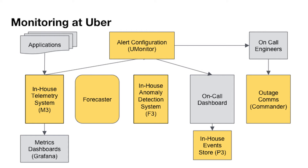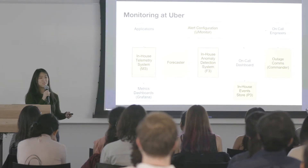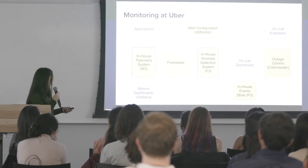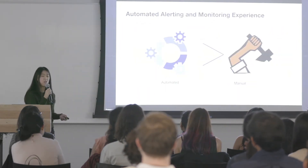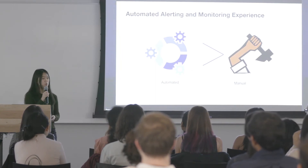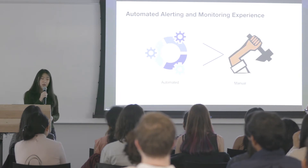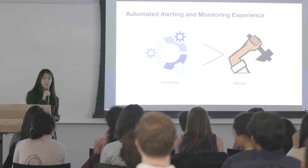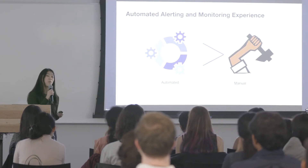That might involve going to our third-party metrics dashboard, Grafana, and eyeballing what exactly is reasonable for that metric. Then when you do get a page, you have to rifle through thousands of events in our events database called P3, and then maybe eventually file a Commander incident — that's our outage communications platform — and in a small percentage of cases, also write a postmortem. As you can tell, a lot of this process is pretty manual: you have to manually emit your metrics, manually configure your alerts, and manually do root cause detection. So in 2017, a lot of observability work has been about making that process more automated.